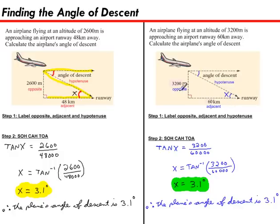Then in step one, we labeled the opposite, adjacent, and hypotenuse sides. And in step two, we chose tan to set up our ratio. The opposite over the adjacent. Then we used an inverse tan on our calculator to arrive at our answer. The angle of descent is 3.1 degrees.